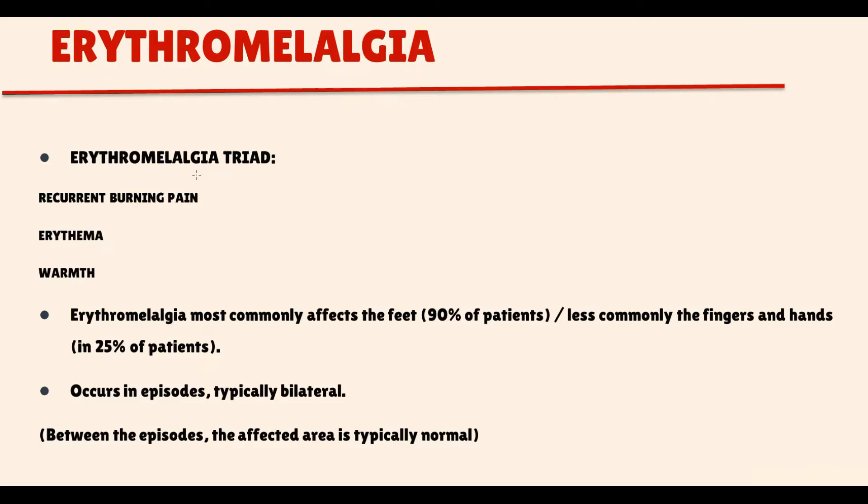Erythromelalgia is a condition characterized by a triad of erythema, warmth, and recurrent burning pain. Most commonly, erythromelalgia affects lower extremities, and less commonly the fingers and hands. Erythromelalgia occurs in episodes and is typically bilateral. So once an episode occurs, both extremities are affected. But between the episodes, the affected area is typically normal.